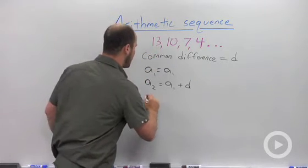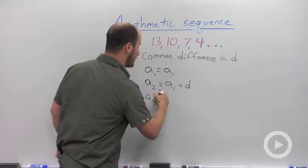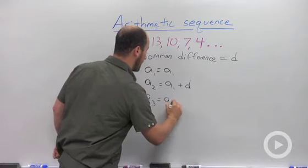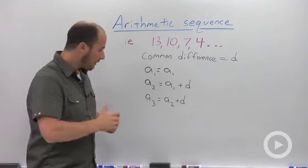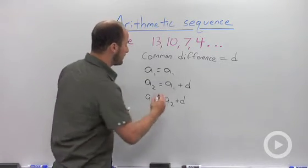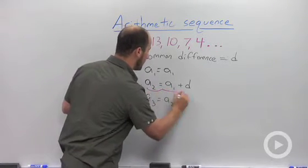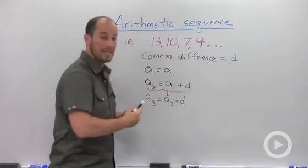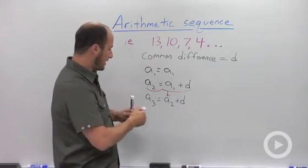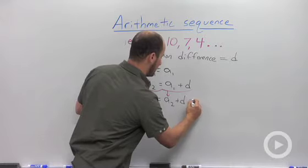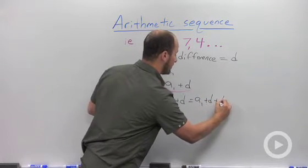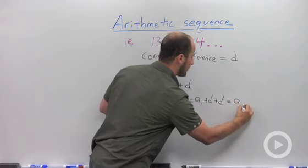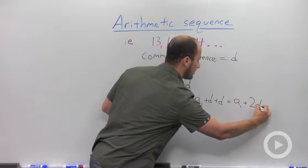To get the third term, all we do is take the second term, a sub 2, and add the d again. But the cool thing about this is we can actually have a statement for a sub 2. So what we end up with is this is just going to be a sub 1 plus d plus d, which works out to be a sub 1 plus 2d.